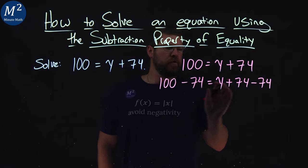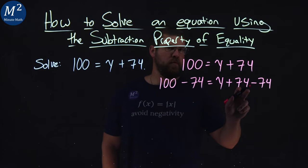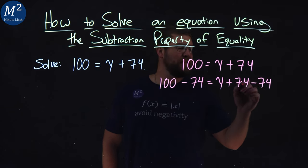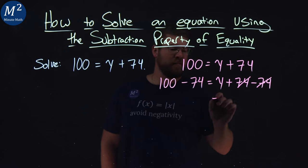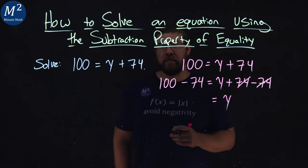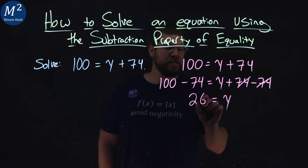It's going to both sides, so it's okay, but I chose 74 because that's going to cancel that 74 out. 74 minus 74 is just 0. So we're left with y on the right. On the left, we have 100 minus 74, which is 26.